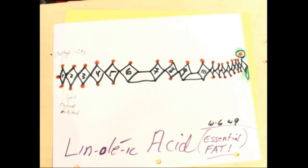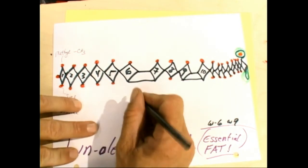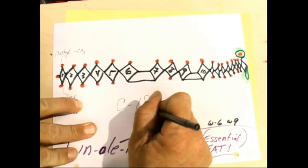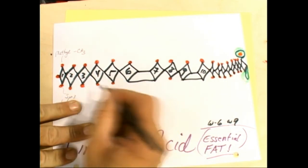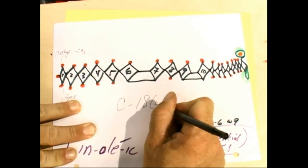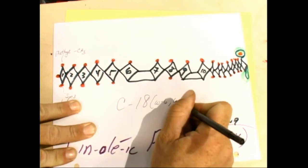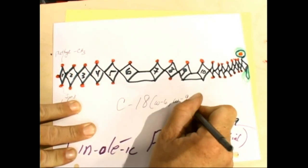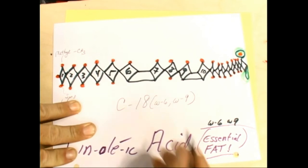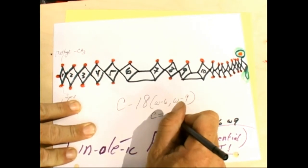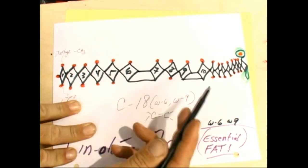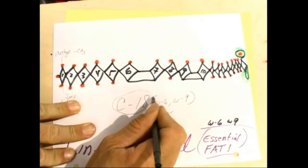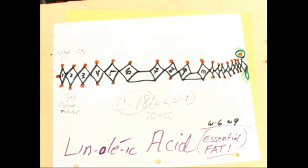So, linoleic looks right in here. It's 18. 18 carbons. The omega we throw in here. Omega-6, omega-9. Two double bonds. Those are written as C-C. That's what separates the fats now. 18, you'll usually always see these even numbers.